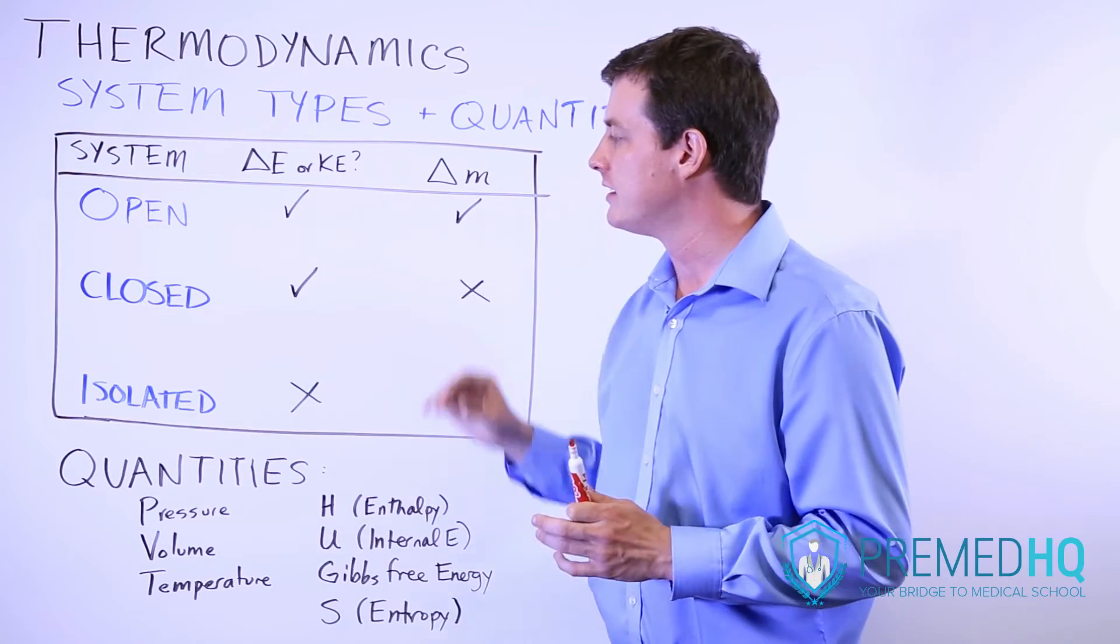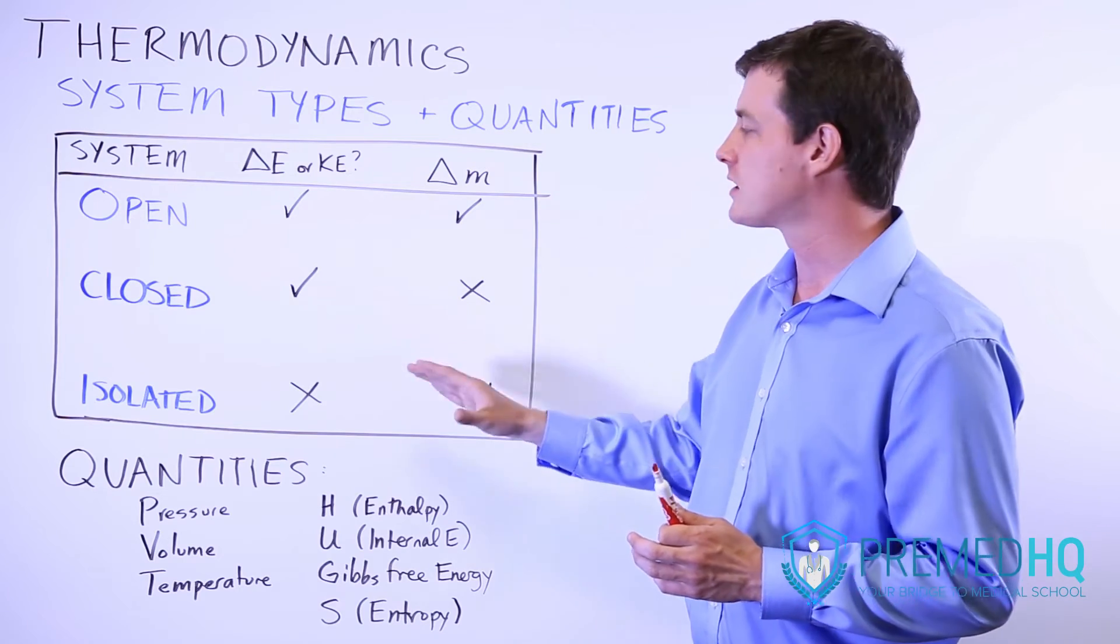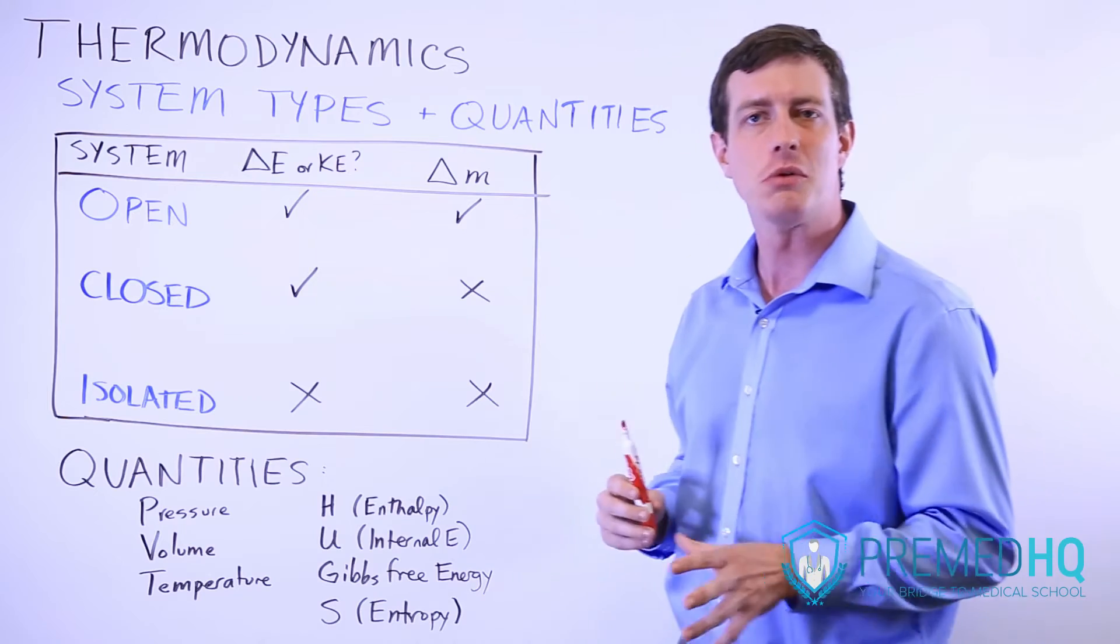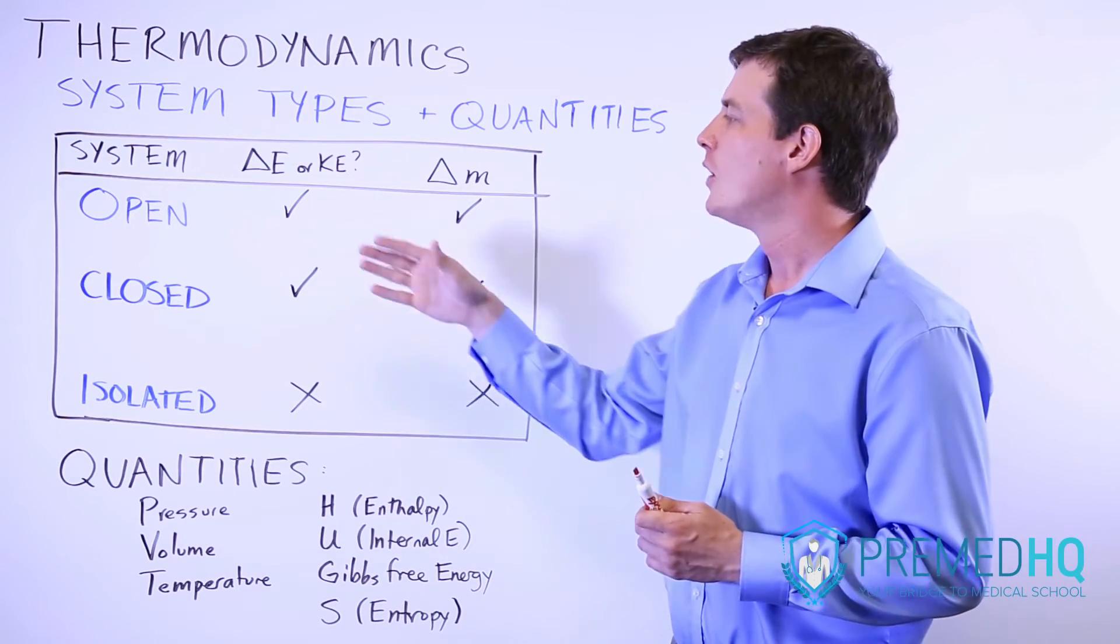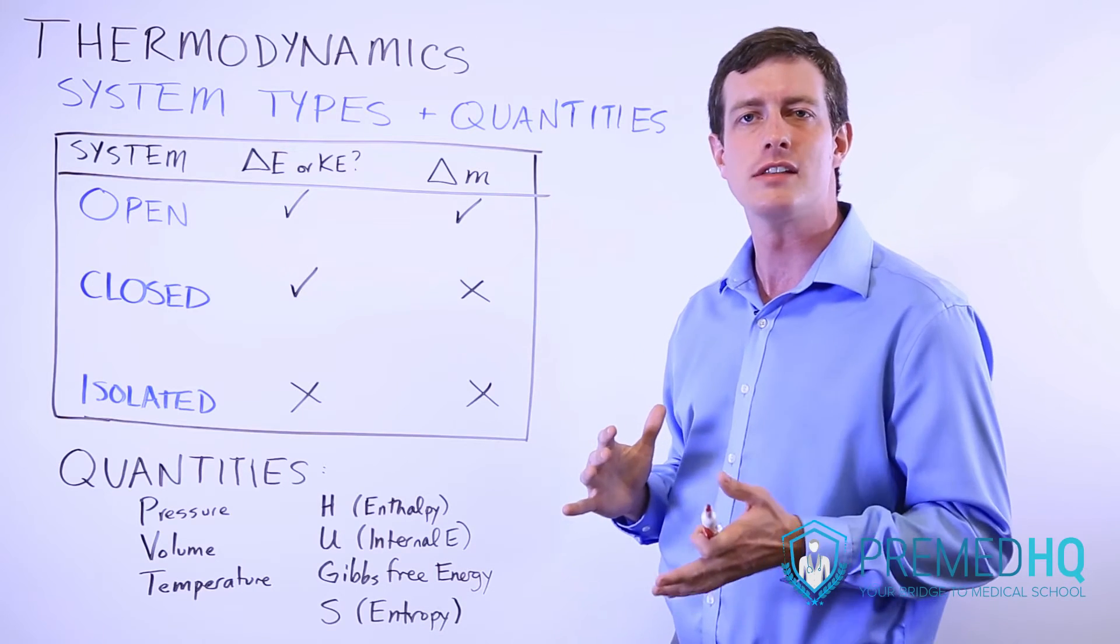Closed versus isolated is often an area where people get confused. But just realize that a closed system cannot exchange matter, but it can exchange energy with its surroundings. And that means work and heat can be used to change the internal energy of that system.